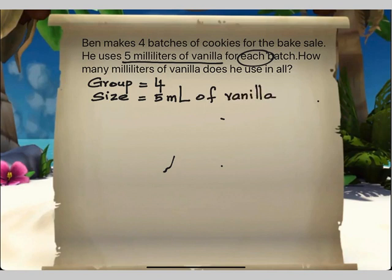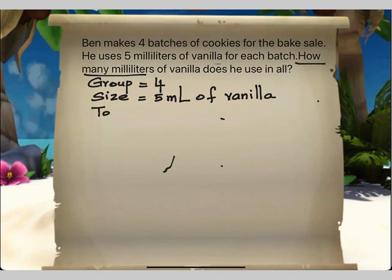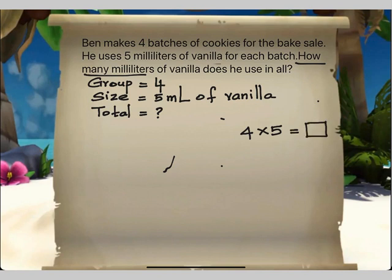What we have to find is how many milliliters — that means we have to find the total quantity of milliliters of vanilla used in all. Any question that requires you to find a total means you have to go for a multiplication number sentence. The multiplication number sentence will be four times five equals what? Four times five means four groups of five.